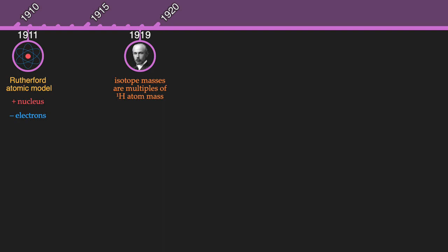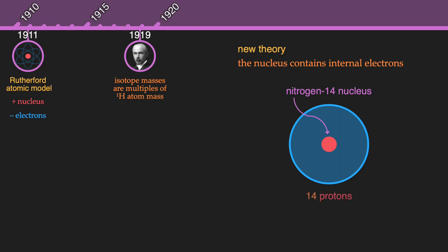In order for the nucleus to have the right charge, scientists thought that there were negatively charged particles inside the nucleus, or internal electrons. So an atom of nitrogen would be made of 14 hydrogen nuclei, 7 internal electrons, plus the 7 electrons that surround the nucleus. We now know that this idea is pretty far from the truth.